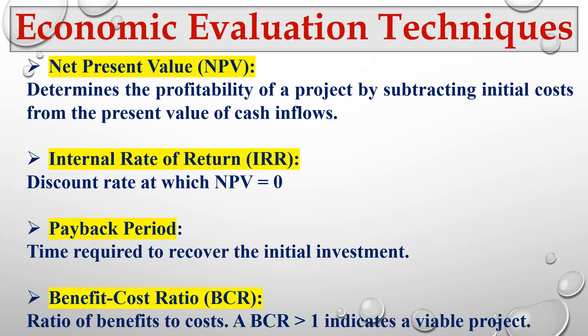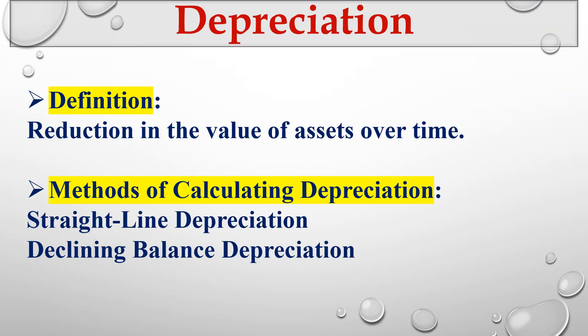Next is depreciation — the reduction in the value of an asset over time. The value of an asset always goes down over time. There are two methods of calculating depreciation: straight-line depreciation and declining balance depreciation.